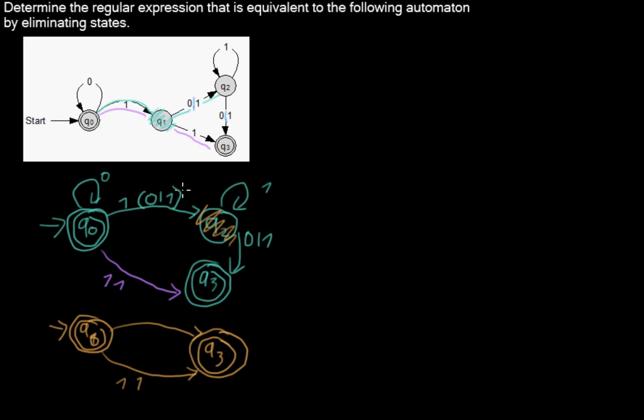And for this whole way, we will add another transition. And then we will just keep this part, so 1, 0 or 1. Then when we are in Q2, we can follow this loop with 1, and that is just the same as 1 star in a regular expression.